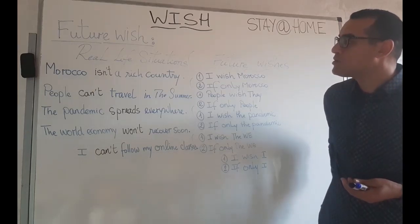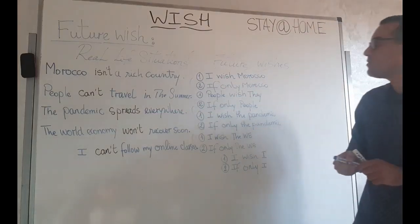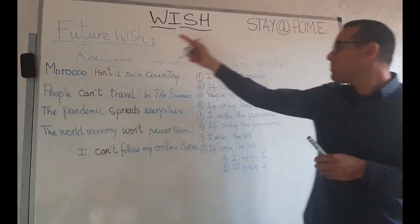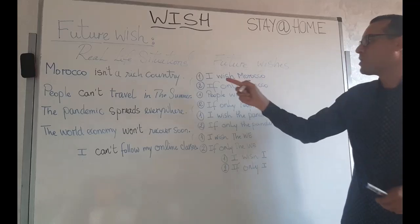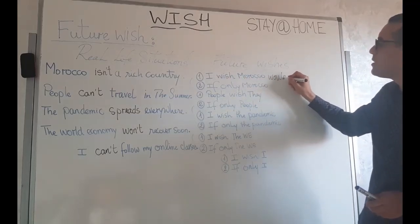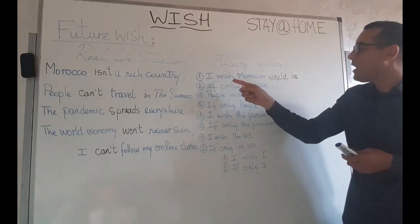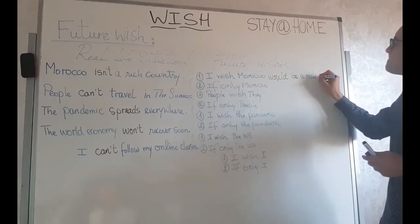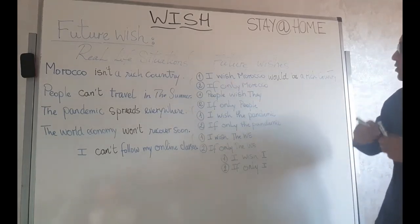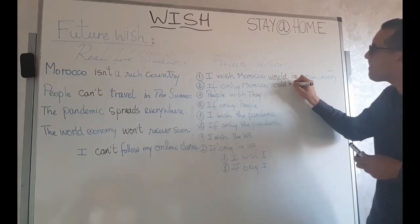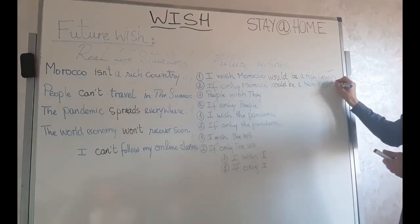First example: Morocco isn't a rich country. The verb 'isn't' is negative, so we make it positive. But we use an auxiliary that refers to the future: 'would.' So: I wish Morocco would be a rich country. Or: if only Morocco would be a rich country.